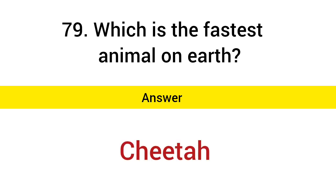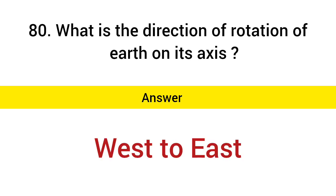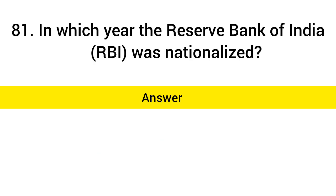What is the fastest land animal? Answer: Cheetah. What is the direction of the rotation of the Earth on its axis? Answer: West to East. In which year was the Reserve Bank of India (RBI) nationalized? Answer: 1949.